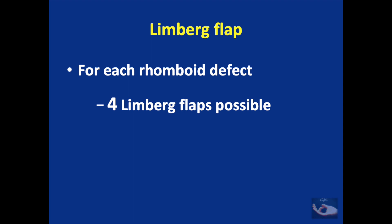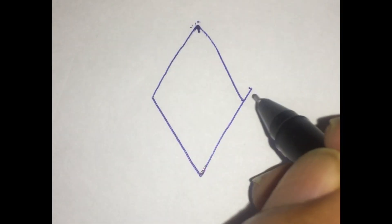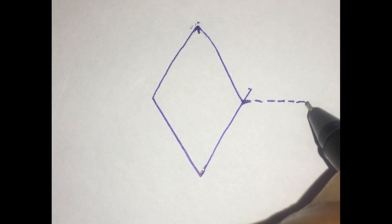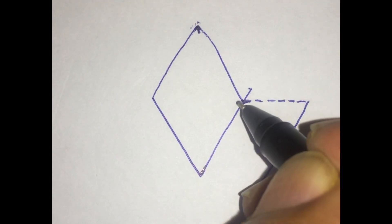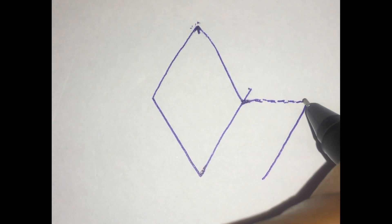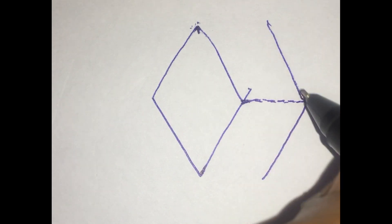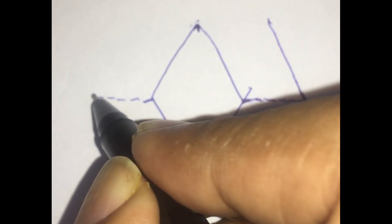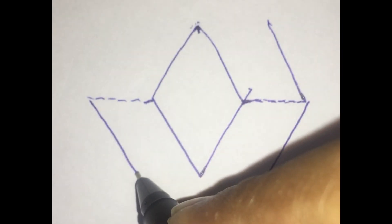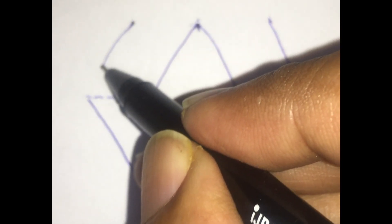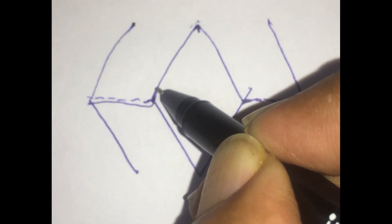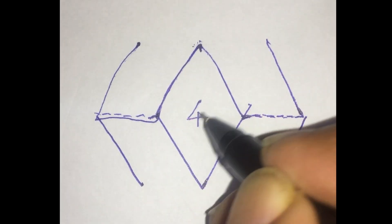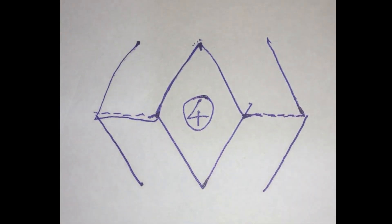We saw an example of a Limburg flap for a rhomboid defect. However, for each rhomboid defect, four Limburg flaps are possible. The first example was when we extended the short diagonal and drew the flap in this direction. However, we can also extend the diagonal and draw the flap in this direction, which will raise a flap based superiorly. The short diagonal can also be extended and the flap marked like this, or it can be marked superiorly based. Thus, four Limburg flaps are possible for each rhomboid defect.